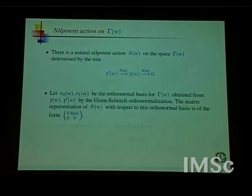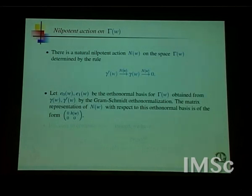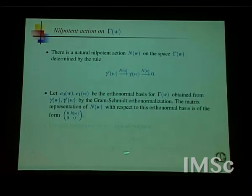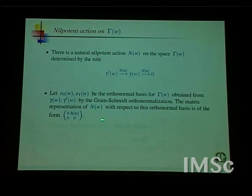We introduce an order by not looking at two vectors alone, but looking at these two vectors along with a nilpotent transformation. The nilpotent transformation is defined simply by saying γ′(ω) maps to γ(ω) and then that maps to zero, which defines an order: γ′(ω) is the first vector and γ(ω) is the next one. The next task is to orthonormalize these two vectors and obtain a matrix representation for the nilpotent operator.